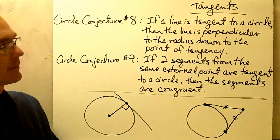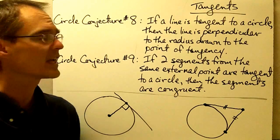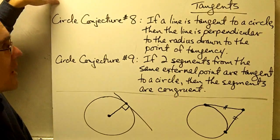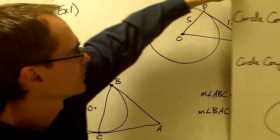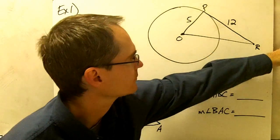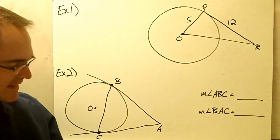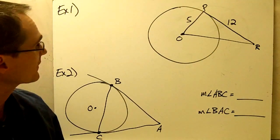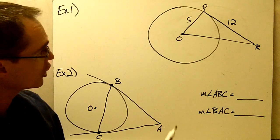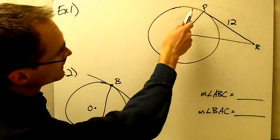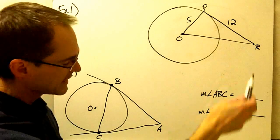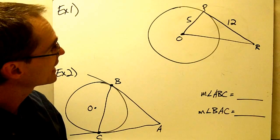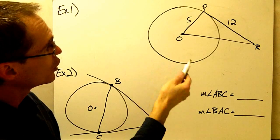Let's take a look at some problems that are going to use these conjectures. Example number 1: in circle O, segment RP is a tangent — find the value of OR.